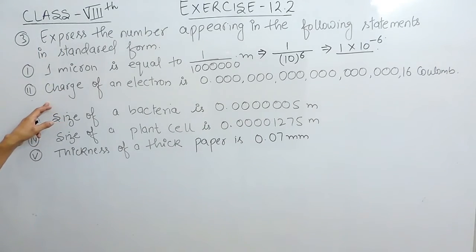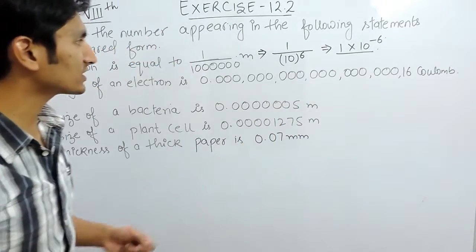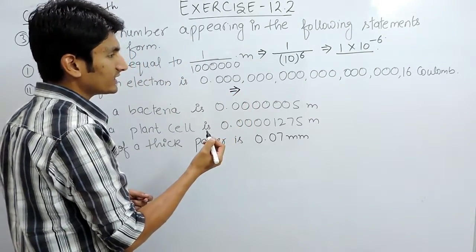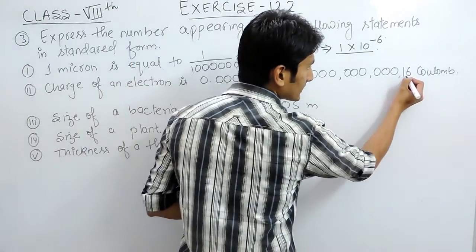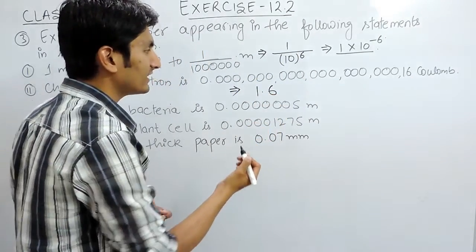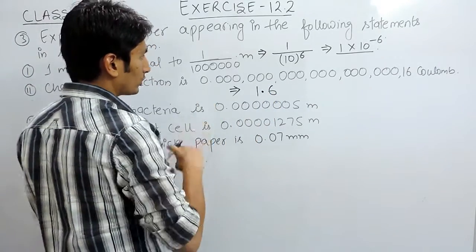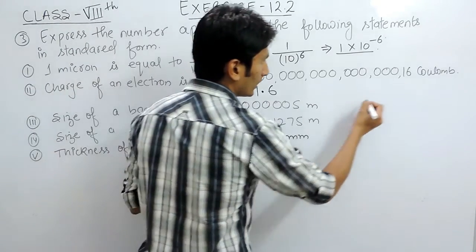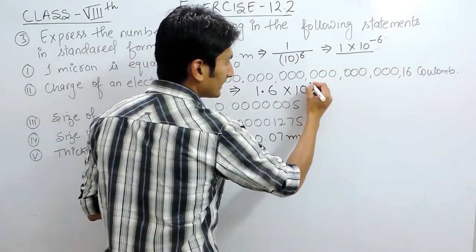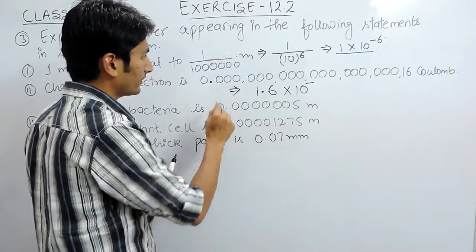In the second part, you have to convert the charge of an electron, which is this many coulombs, into its standard form. In standard form there should be only one digit on the left-hand side of the decimal. To shift this decimal to the right-hand side, we write it as 10 raised to power minus, and then count the number of digits shifted.